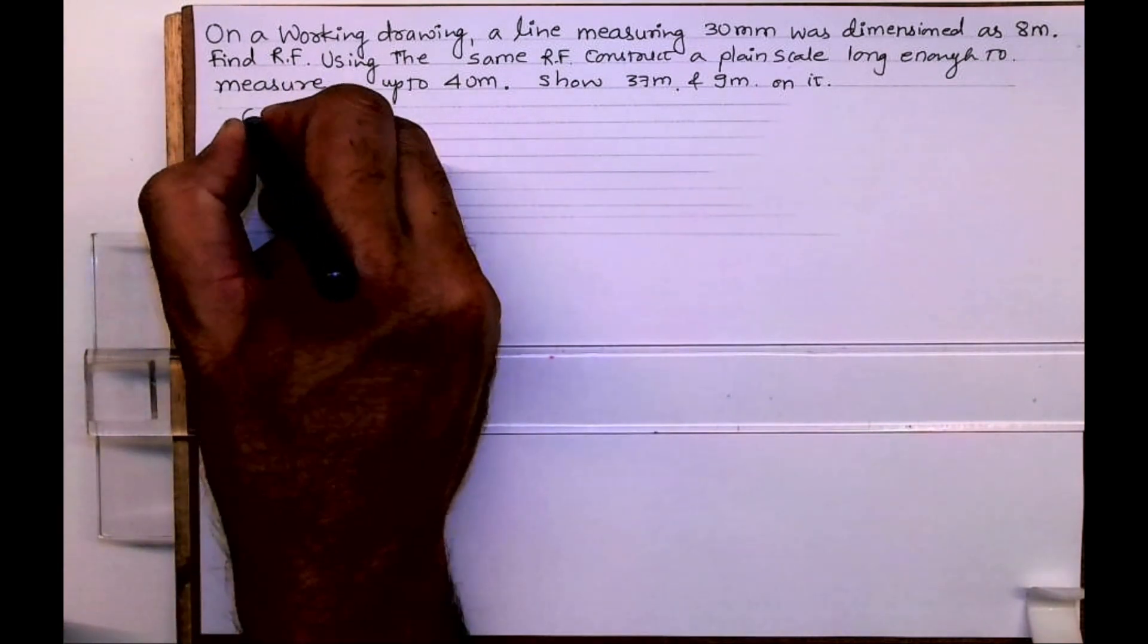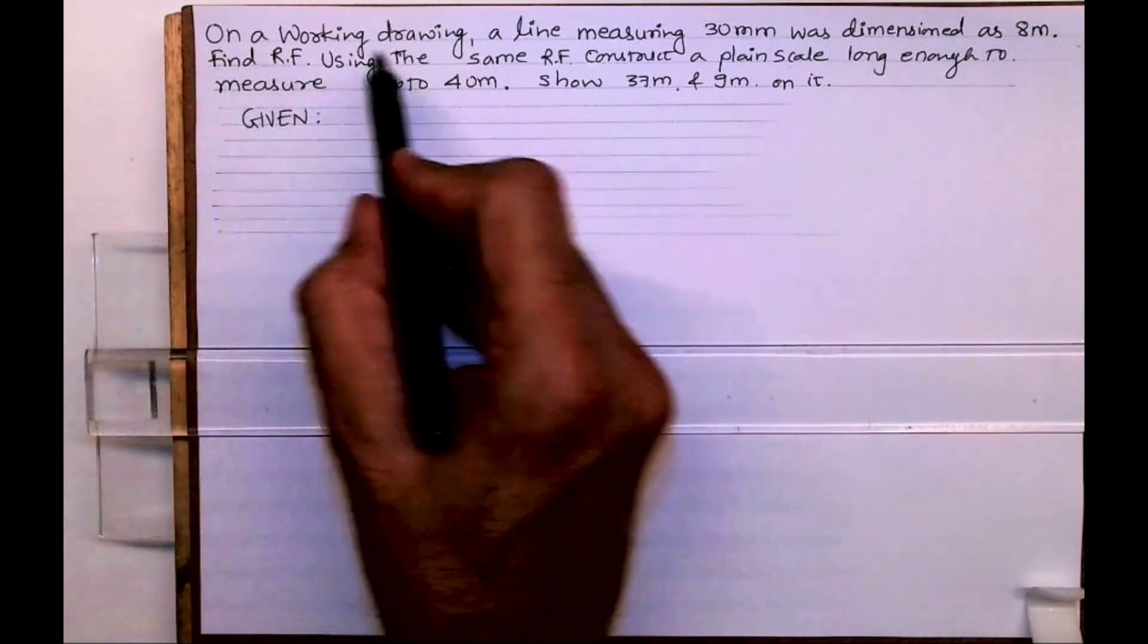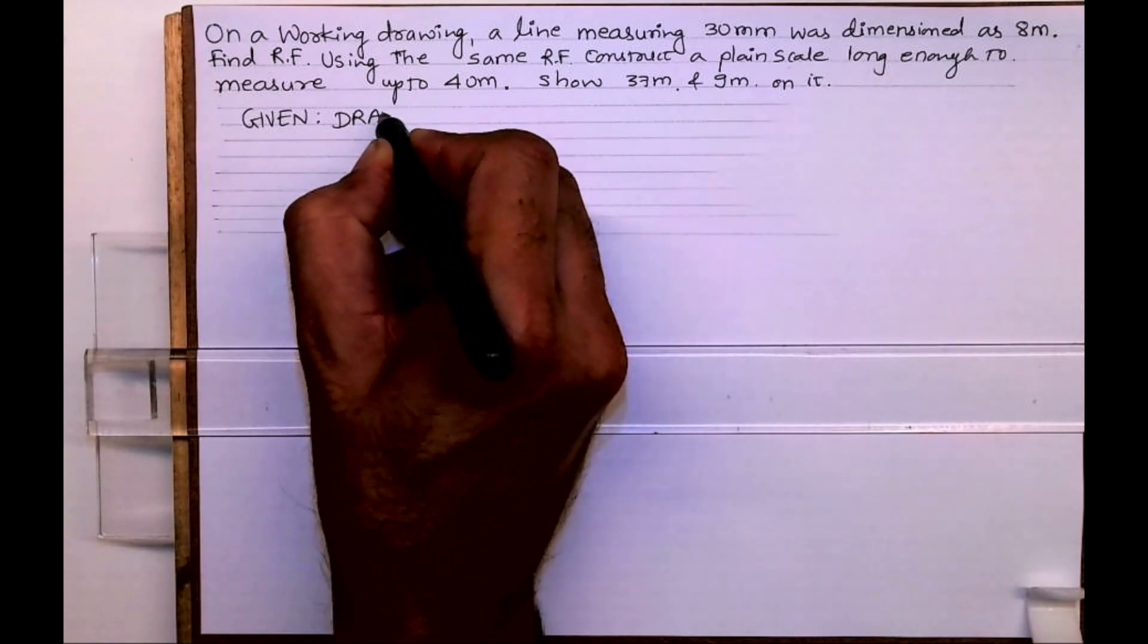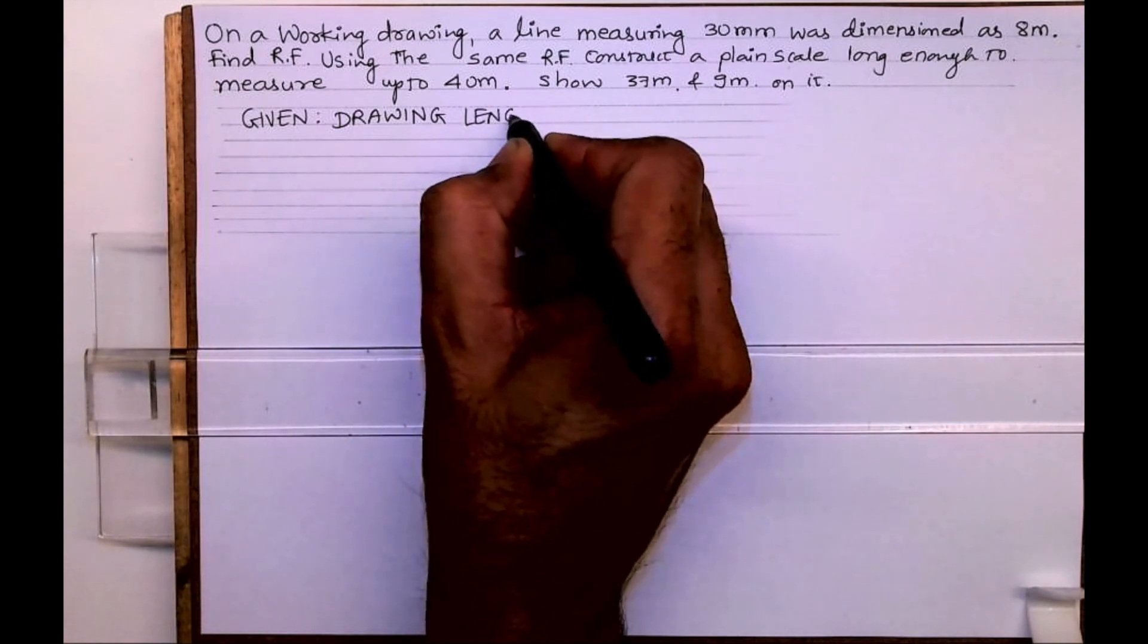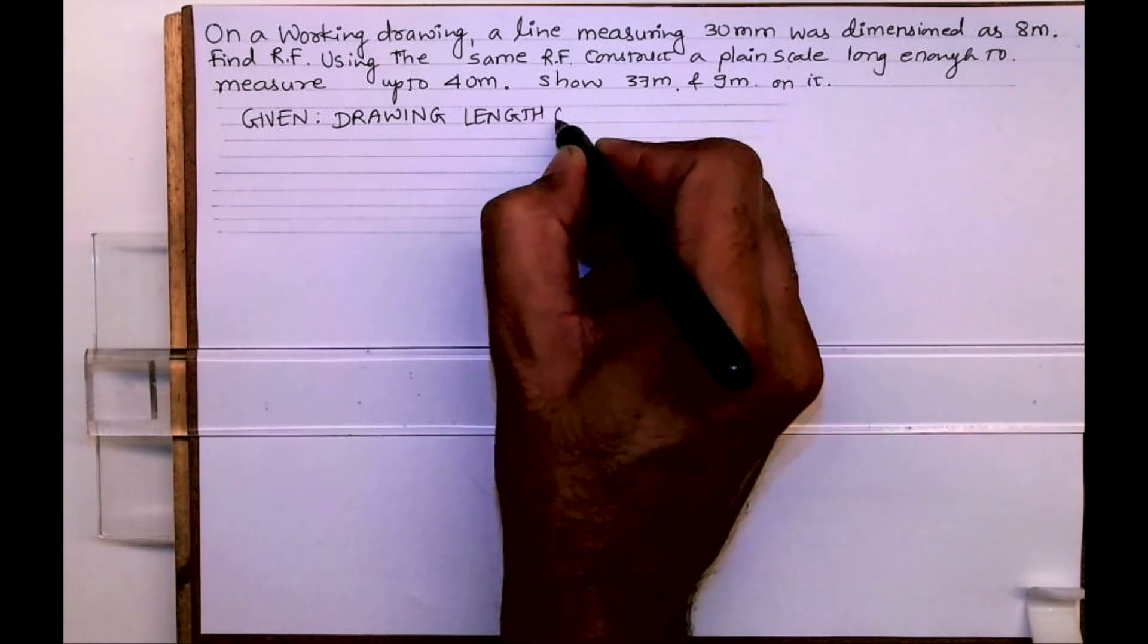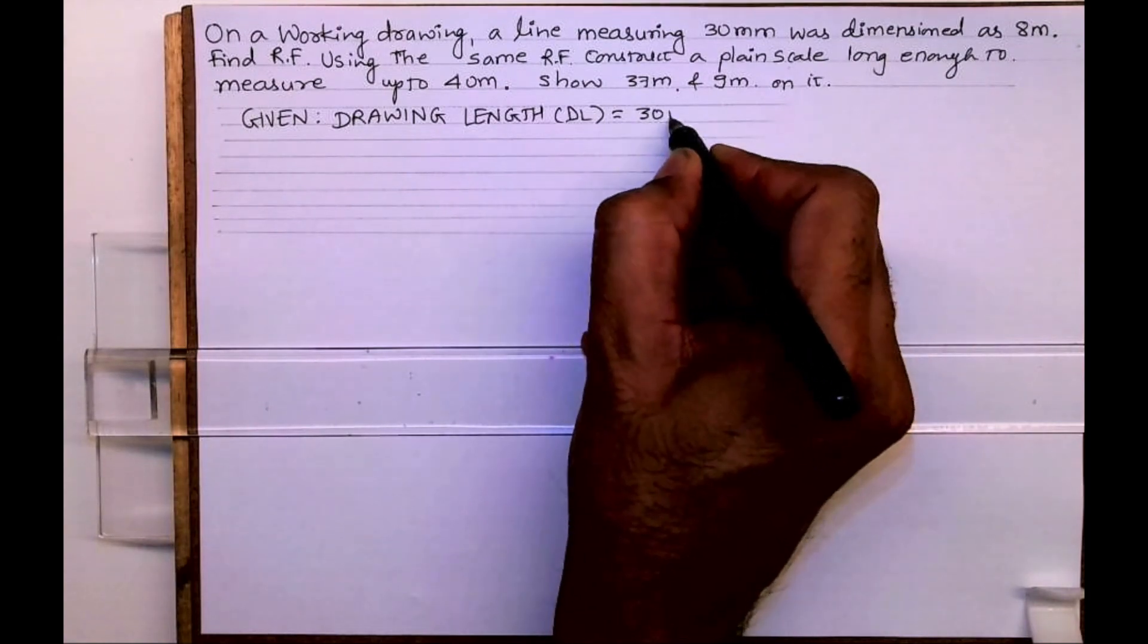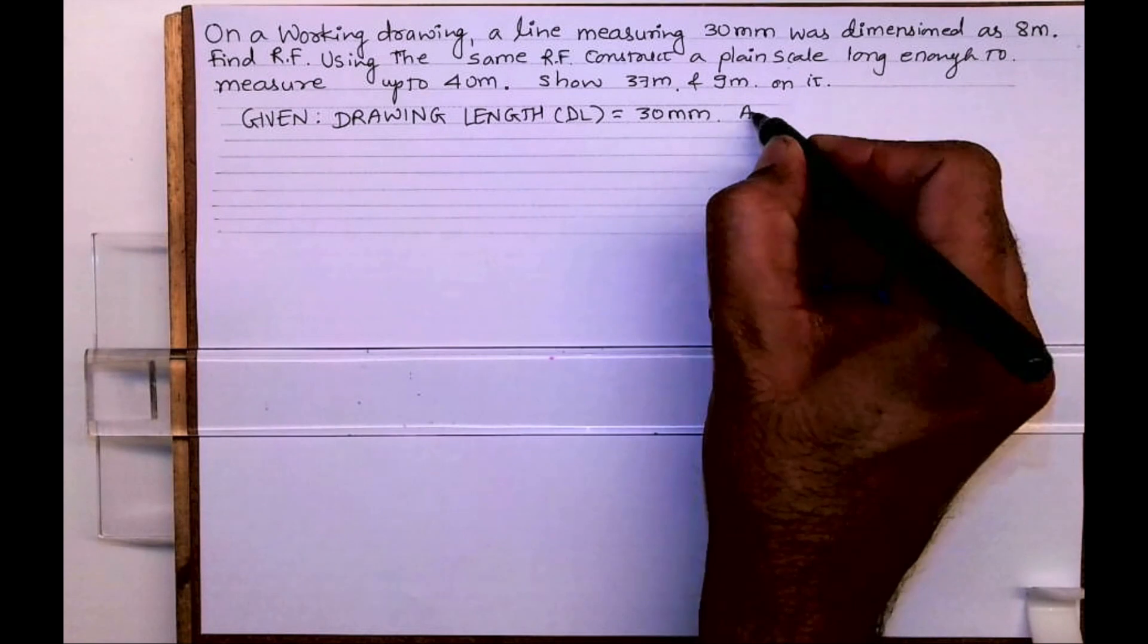So we need to draw a plane scale. First we will write given data. They have given a line measuring 30mm, so that is drawing line, then they have given actual length 8 meter.